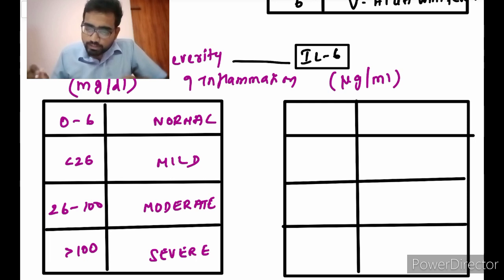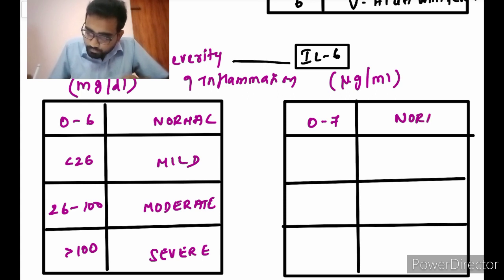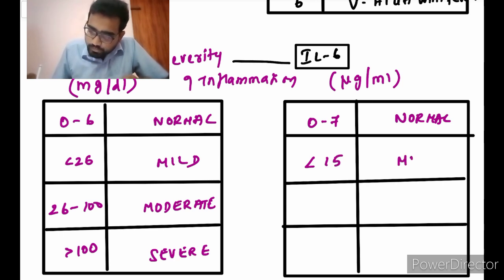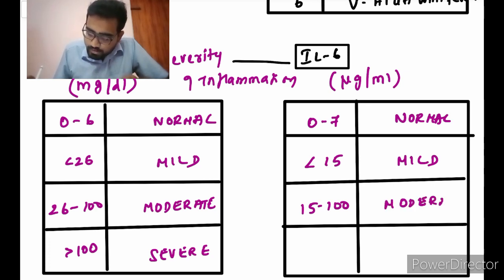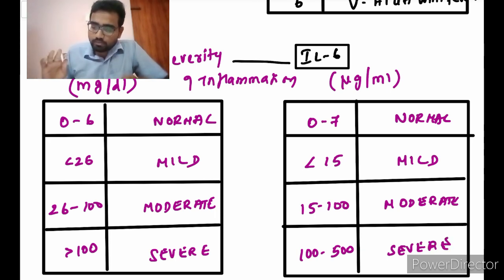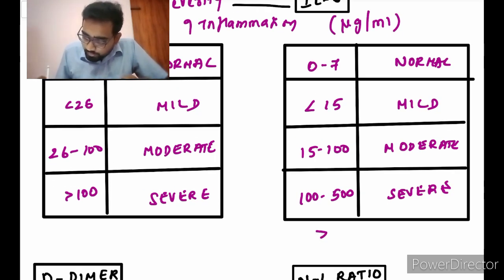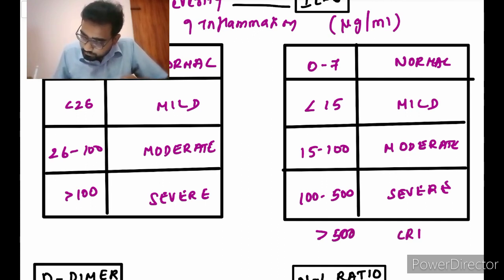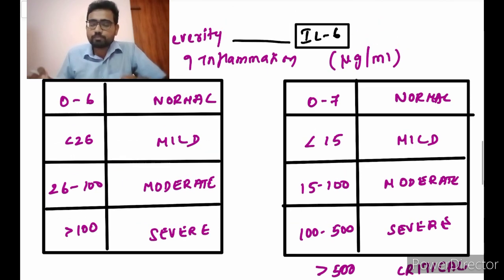Interleukin-6 is measured in micrograms per mL. Values of 0 to 7 are normal; values less than 15 are mild; values between 15 to 100 are moderate; values of 100 to 500 micrograms per mL are severe; and if you are having more than 500 micrograms per mL of interleukin-6 then that is critical.